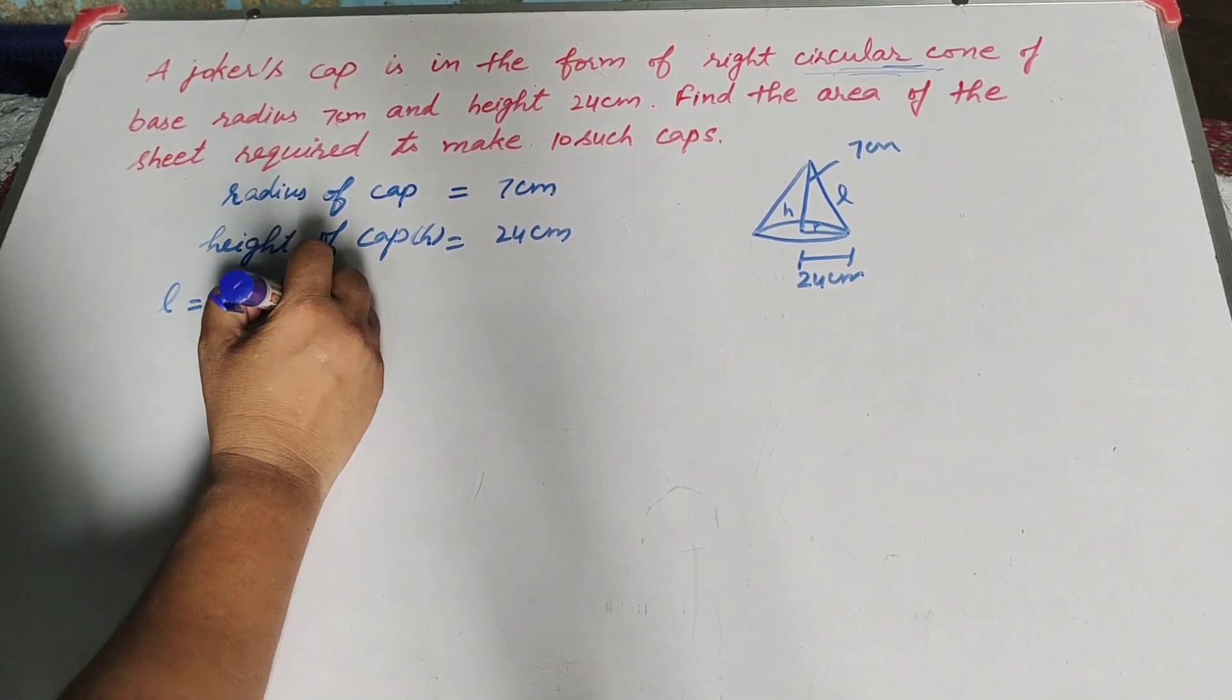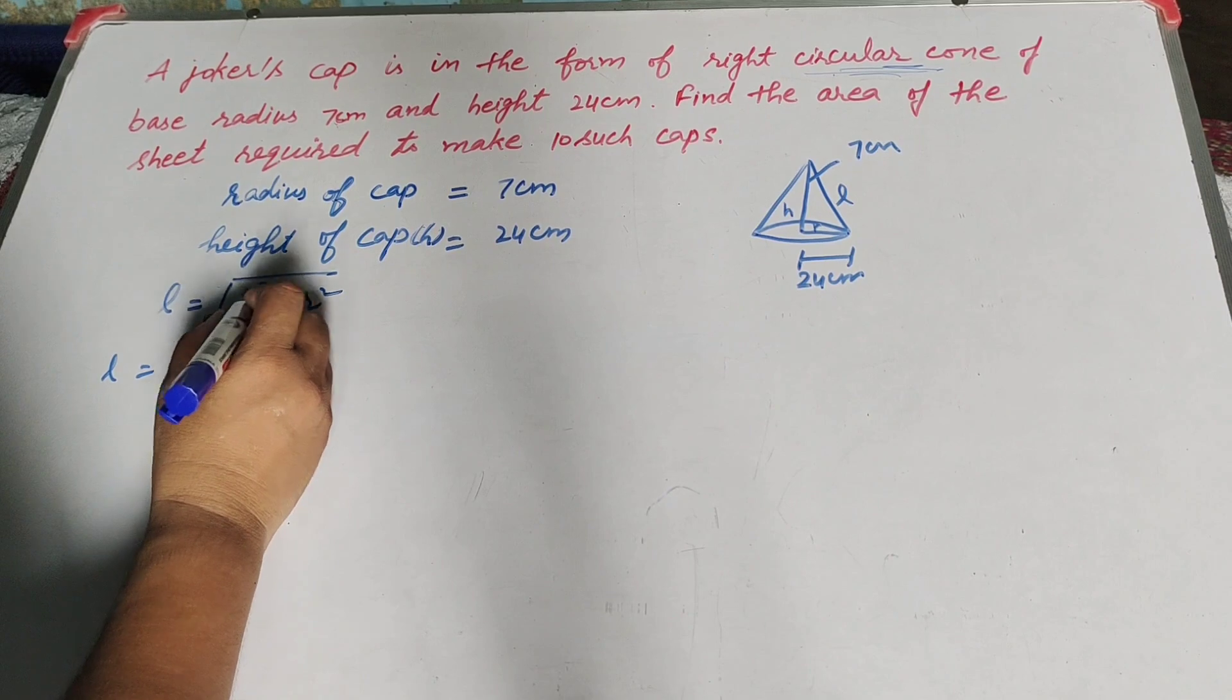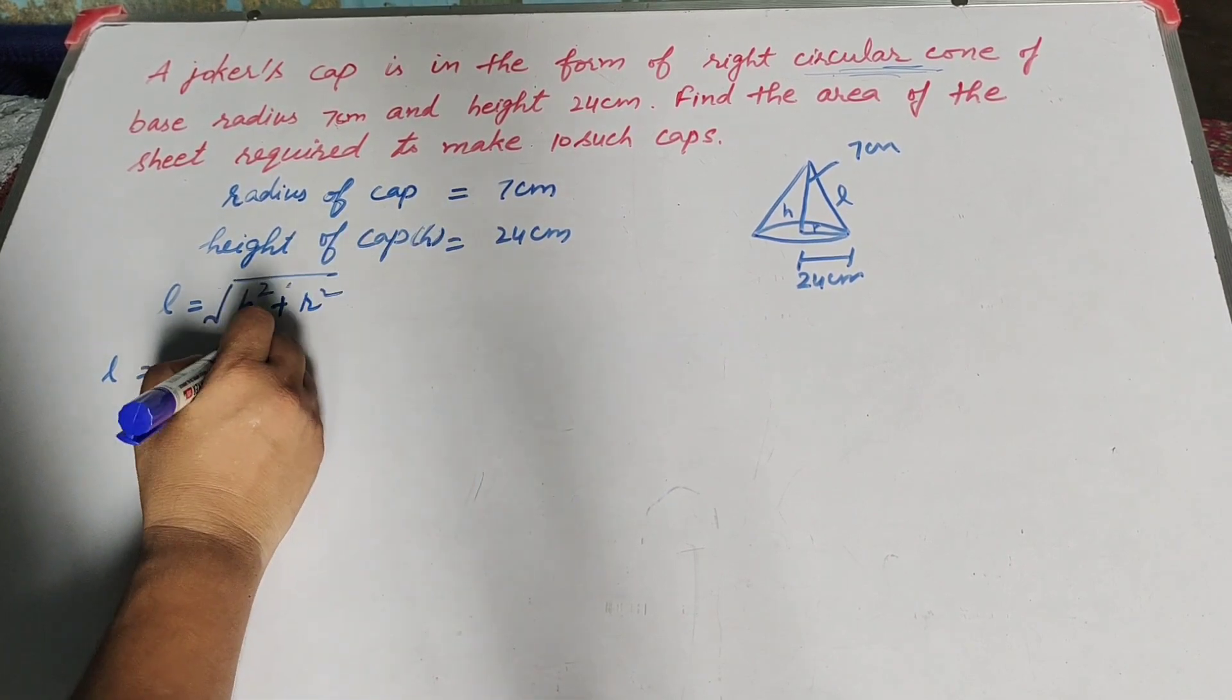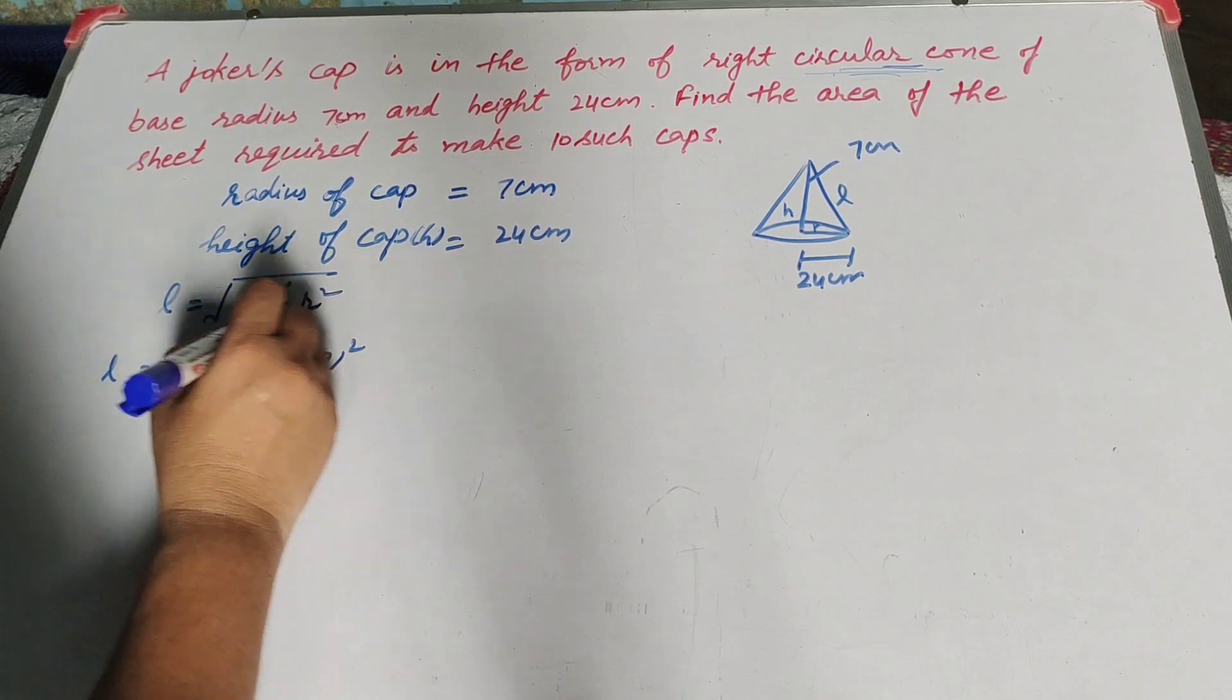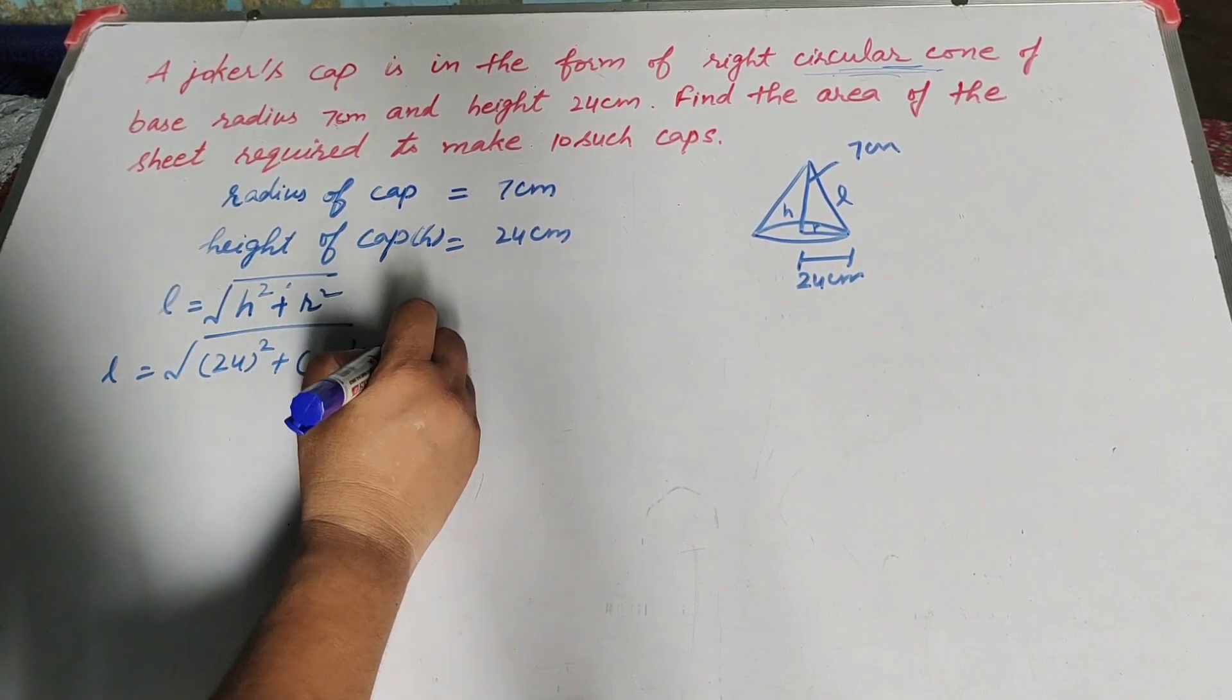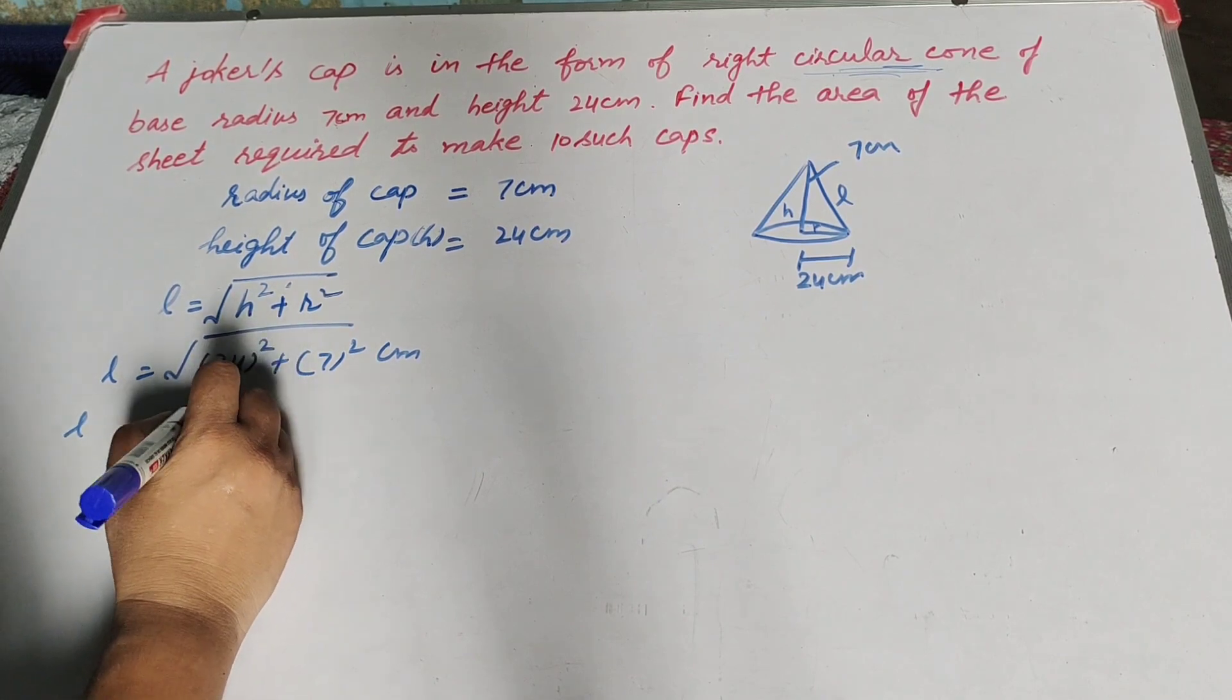We find L is equal to, using Pythagoras theorem, L is equal to square root of h square plus r square. h is equal to 24 square, r is 7 square centimeters.